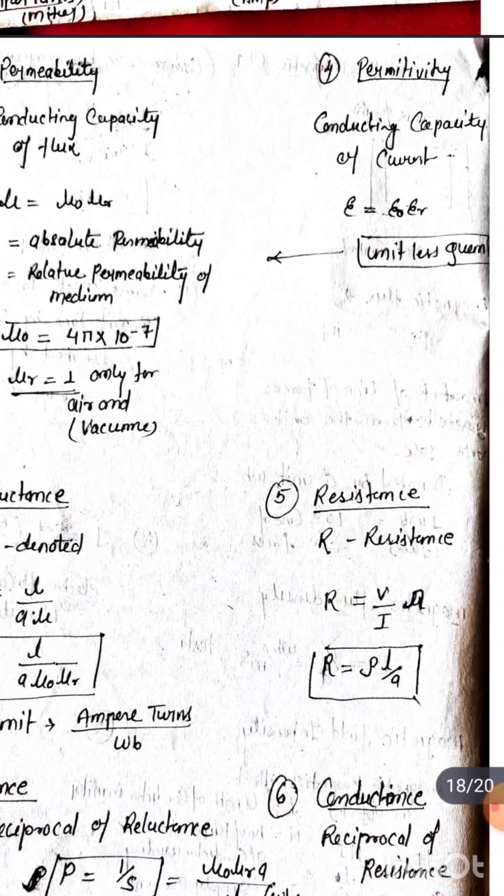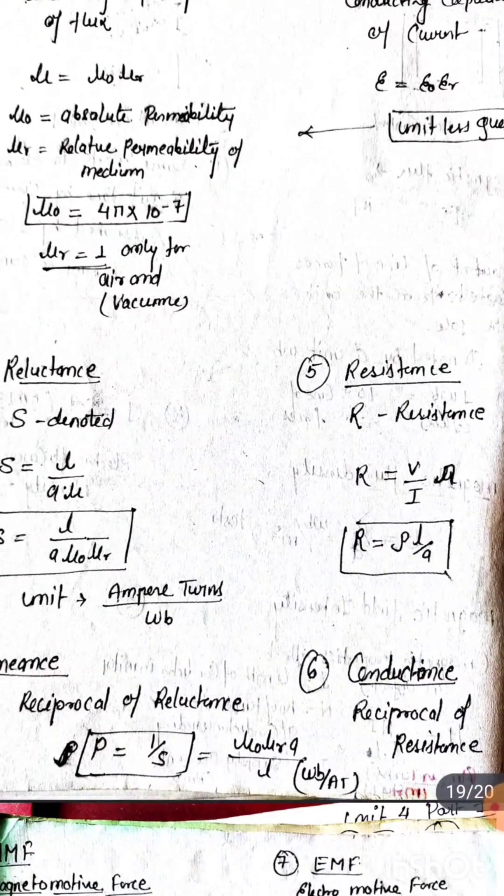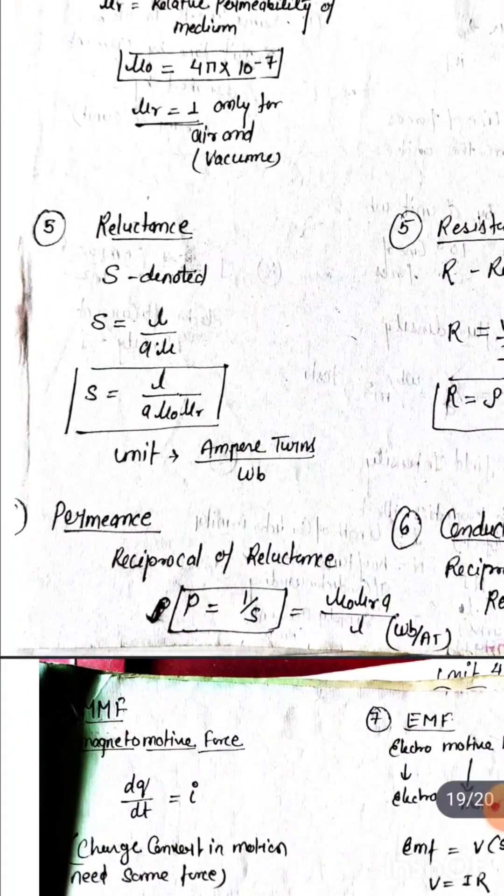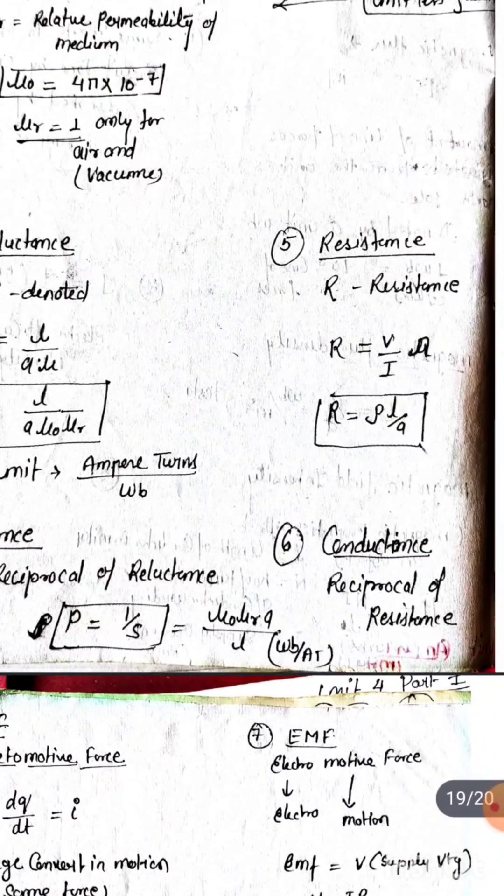Permeance is reciprocal of reluctance, which is 1 upon S. Conductance is reciprocal of resistance. If we minimize our resistance or resistivity, then conductivity will be high.